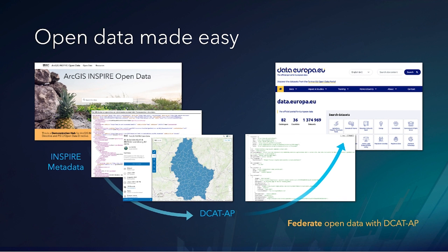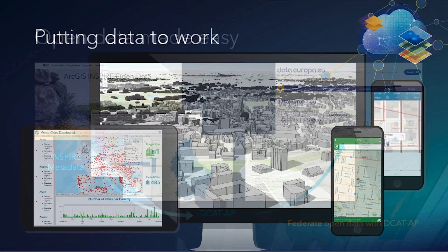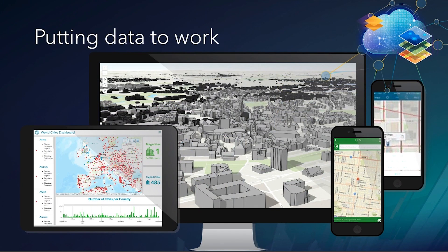ArcGIS helps make open data easy. ArcGIS Hub automatically transforms your Inspire ISO metadata to DCAT-AP, which is the de facto standard for metadata interchange across European data catalogs. Fundamentally, ArcGIS Inspire Open Data helps put data to work. Your interoperable web services are ready to use in a variety of common GIS clients, desktop and mobile devices, and to combine with other data in maps and apps that support understanding and action.